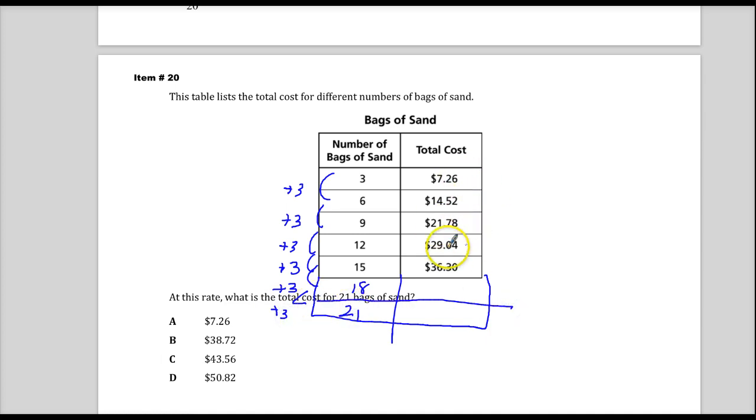So, if I could just figure out how much is going up every time, I can just extend it out two more blocks and get my answer.